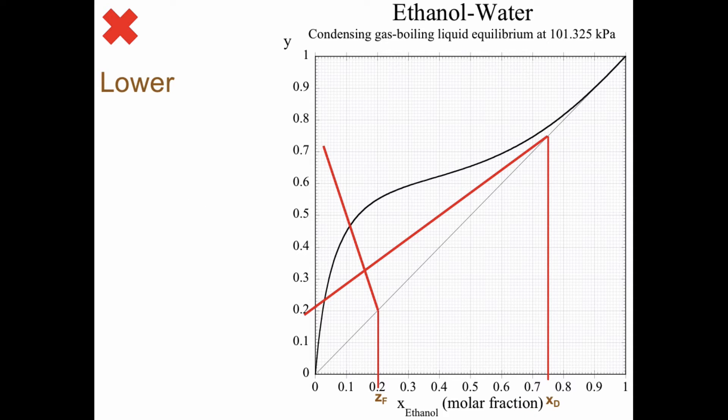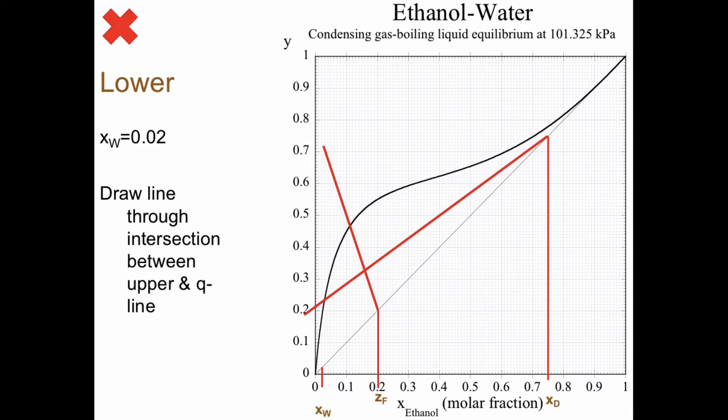Time for the lower. xW is 0.02, so we find the point on the diagonal, and then we should draw a line through the intersection between the upper and the q line, and that's a line like that.